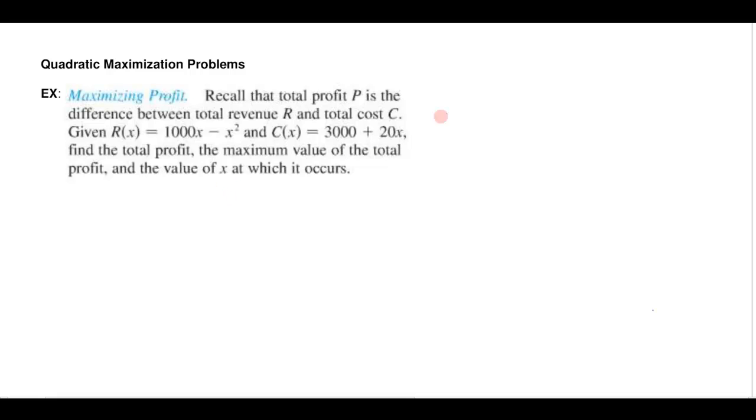So I know that my profit is just going to be the revenue minus my cost. So I can easily enough do that. I can just plug in my revenue function, 1000x minus x², so there's my revenue function. And if I subtract from that the cost, the cost is given by this formula, 3000 + 20x.